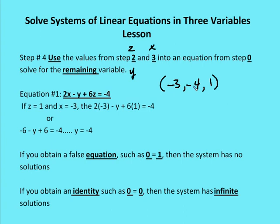If you obtain a false equation such as zero equals one, then the system has no solution — there are no points of intersection between the three lines. If you obtain an identity such as zero equals zero, then the system has an infinite number of solutions — those lines coincide. That's it for this edition of Auton Math. Come join us for a practice problem. These equations are fun to solve — they take a little more effort than a two-variable system, but if you know what you're doing and take your time, it's a very simple process.